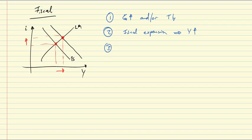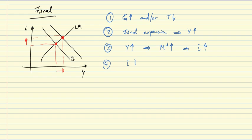Third, that increase in income in turn leads to an increase in money demand due to higher transactions demand. The money demand curve shifts right and that in the financial market leads to an increase in the interest rate. Fourth, the increase in the interest rate triggers a decrease in investment and hence, through the multiplier process, a decrease in income.